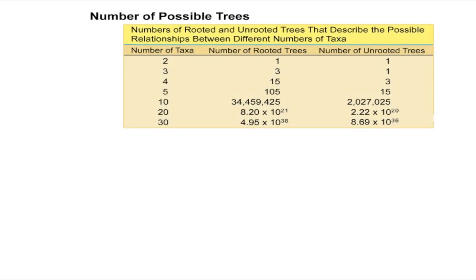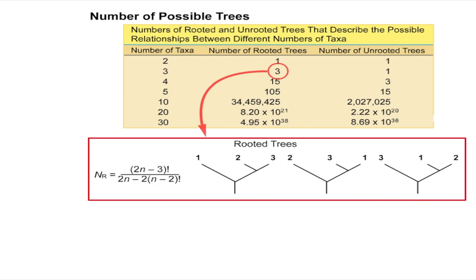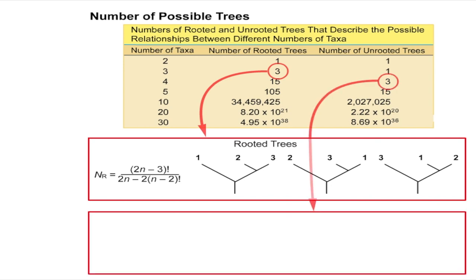The number of possible trees that can describe the relationship between a set of taxa increases rapidly with the number of taxa under study. Given n taxa under study, the number of possible rooted and unrooted trees can be found with the equations shown. It is quite common for data to be available for 30 or more taxa in modern studies. Yet the resulting number of possible trees makes it impossible for even the fastest computers to evaluate them all. Methods are available to narrow the number of trees down to only the most probable ones.